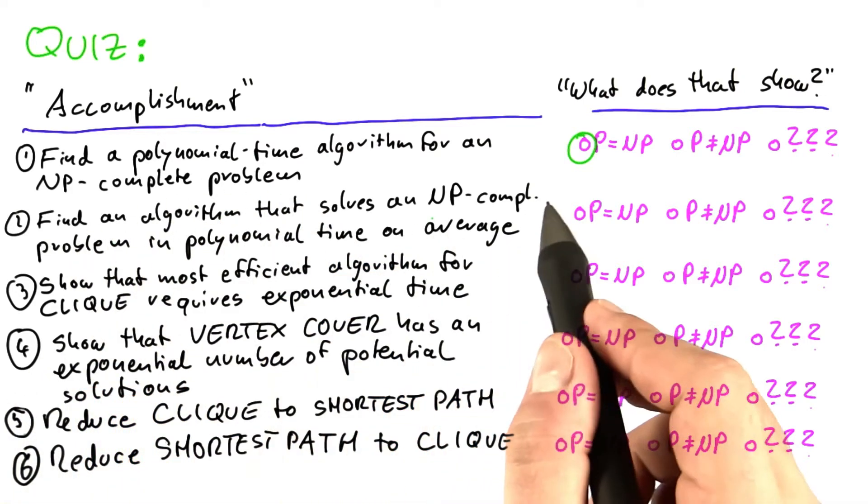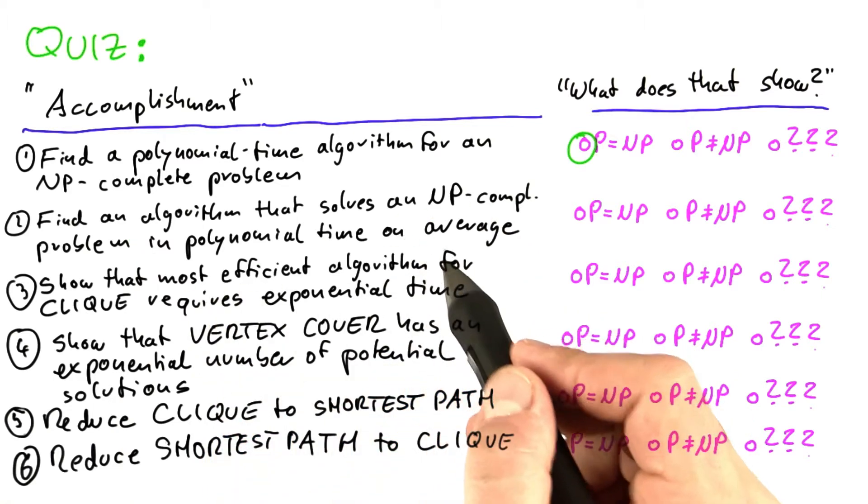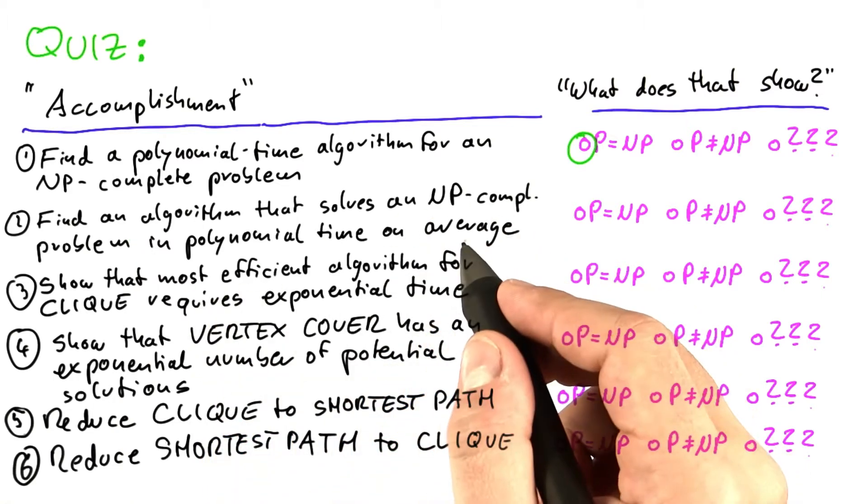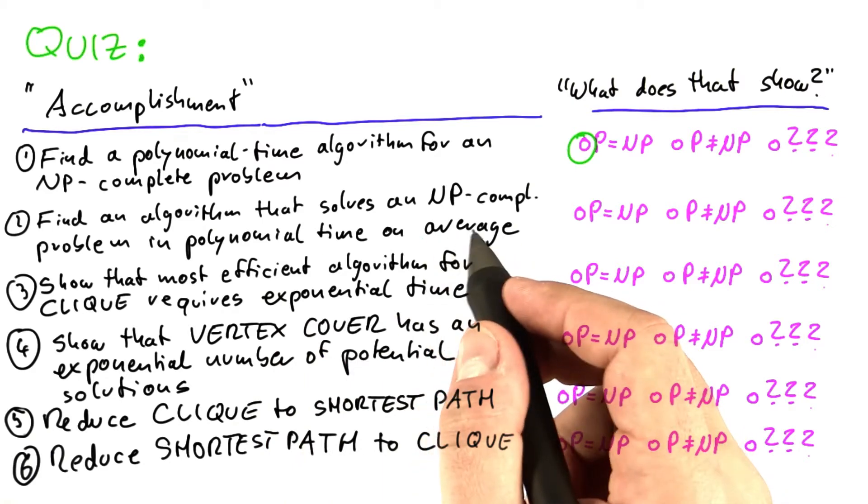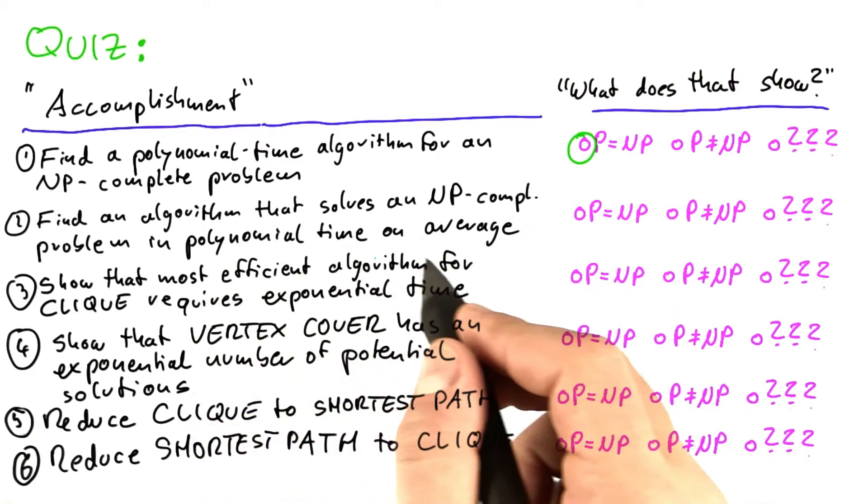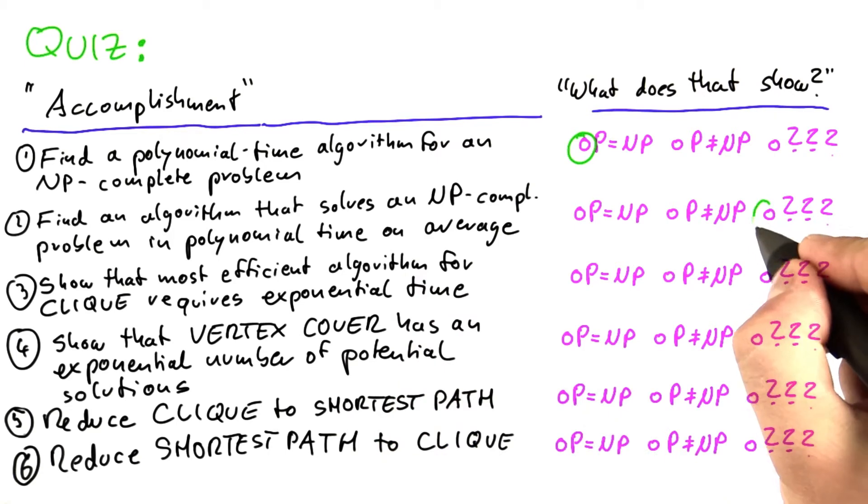Finding an algorithm that solves an NP-complete problem in polynomial time on average, now that's a very interesting one because you might be inclined to think, well, if it solves an NP-complete problem in polynomial time on average, then probably that is sufficient.